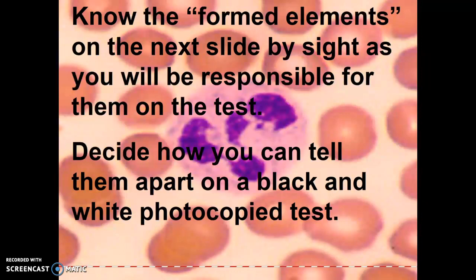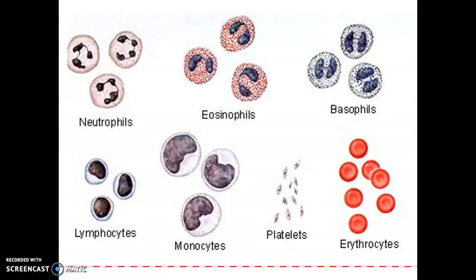Know the formed elements — you've practiced them in your lab and you need to tell them apart because you'll see pictures like this on the test. Neutrophils have about three or four lobes in their nucleus. They're called polymorphonuclear cells — PMN — poly meaning many, morpho meaning shape, nuclear meaning nucleus. So PMN means many lobes or shapes in their nucleus.